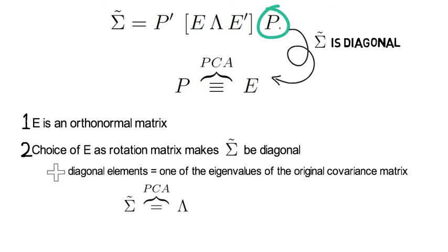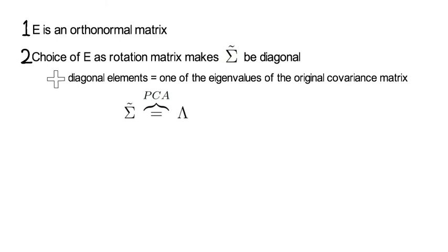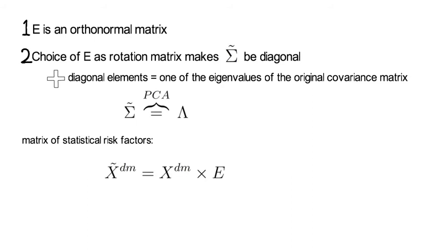Sigma tilde within a PCA will coincide with lambda. So said differently now, the matrix of statistical risk factors equals X tilde dm, and that is nothing else than the original X^dm multiplied by the eigenvector matrix.